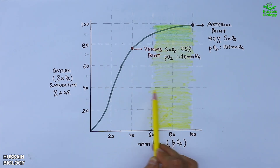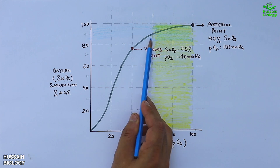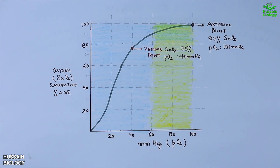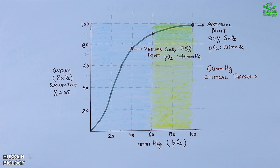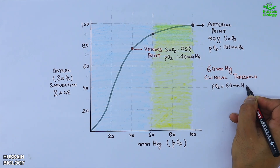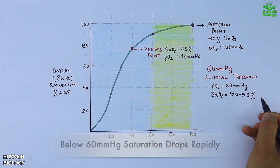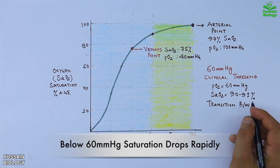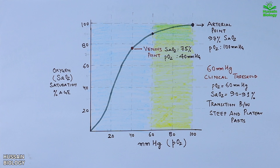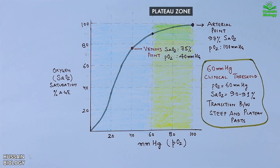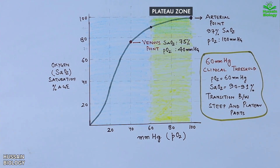We divide the graph into two regions: one region shown in yellow is above 60 mmHg, and the other before 60 mmHg. The 60 mmHg mark is the clinical threshold point, where oxygen saturation is 90–91%. This marks the transition between the steep region and the plateau region — the yellow zone is the plateau zone and the blue zone before 60 mmHg is the steep zone.